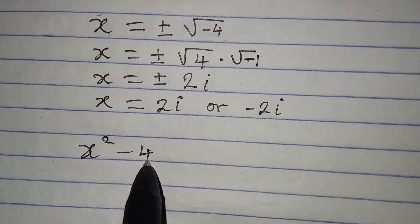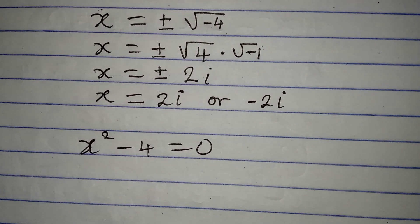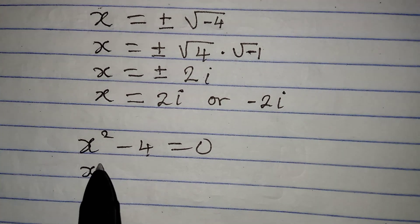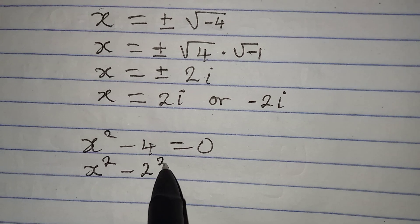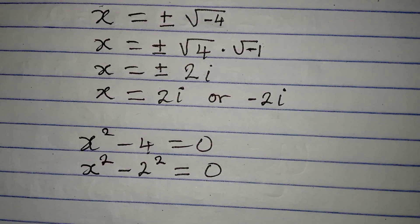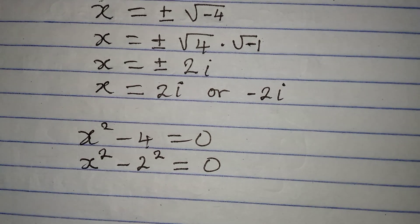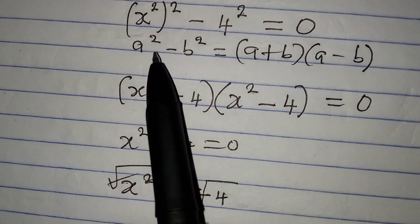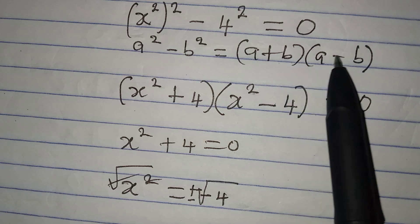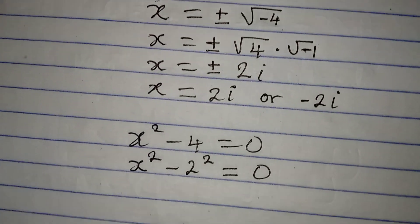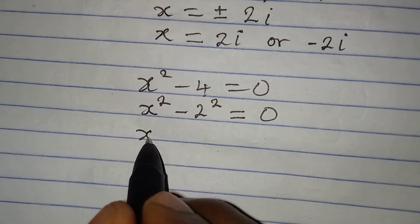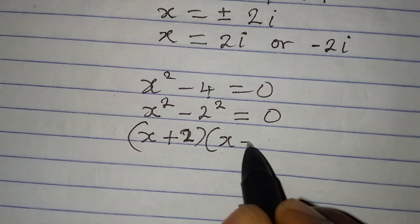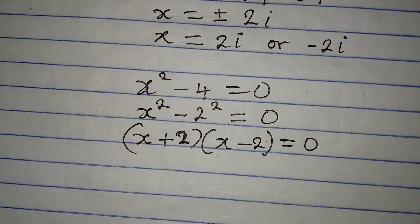So x squared minus 4 is equal to 0. Now from here, we are also expected to have 2 values because I can still apply difference of 2 squares. This is x squared minus 2 squared which will be equal to 0 because 4 is the same thing as 2 squared. Now apply the same difference of 2 squared. If you have a squared minus b squared, that will be equal to a plus b into a minus b. And then if I apply the same, I'm going to have x plus 2 into x minus 2 and this will be equal to 0.